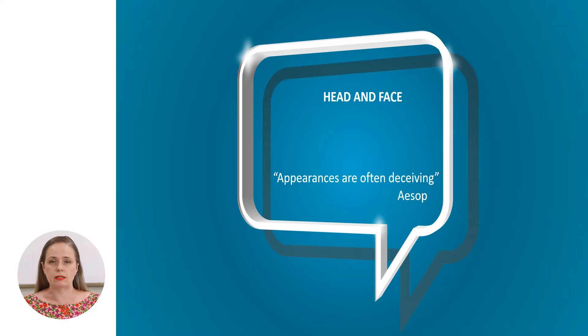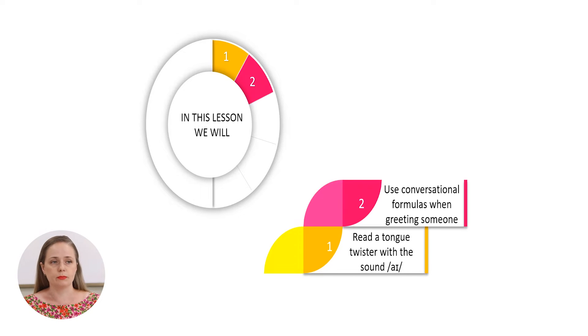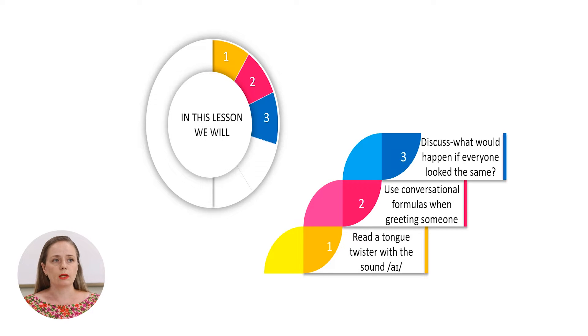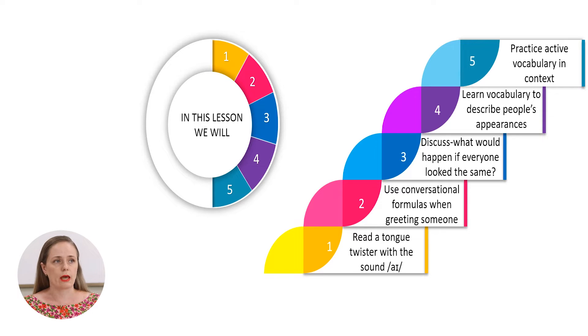The first lesson is entitled Head and Face. In this lesson we will read tongue twisters with the sound I, use conversational formulas when greeting someone, discuss what would happen if everyone looked the same, learn vocabulary to describe people's appearances, and practice active vocabulary in context.